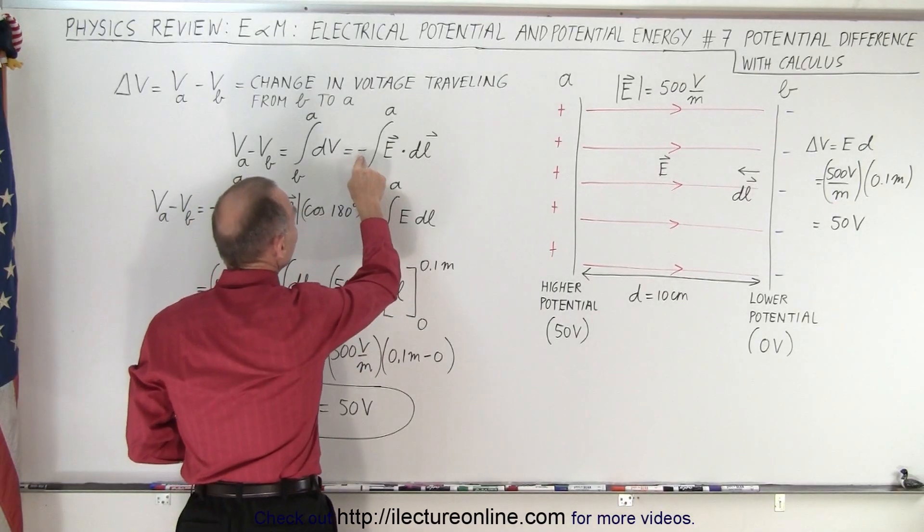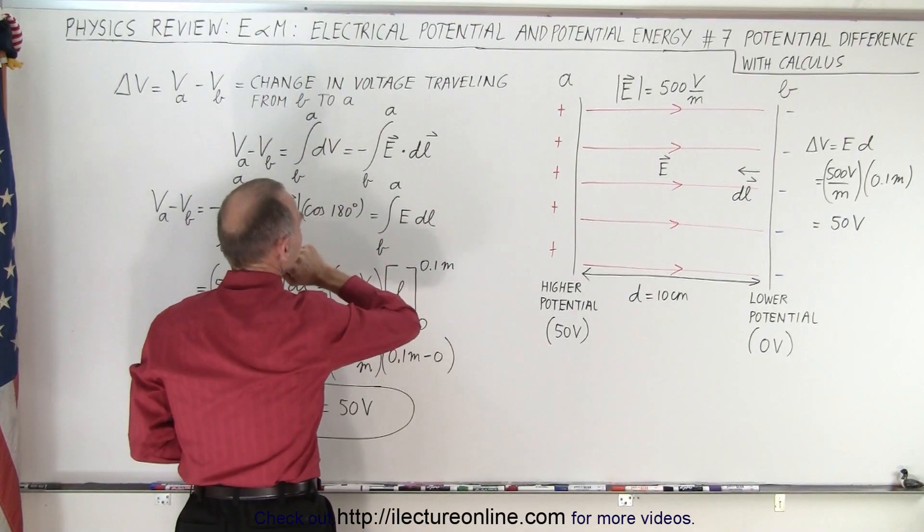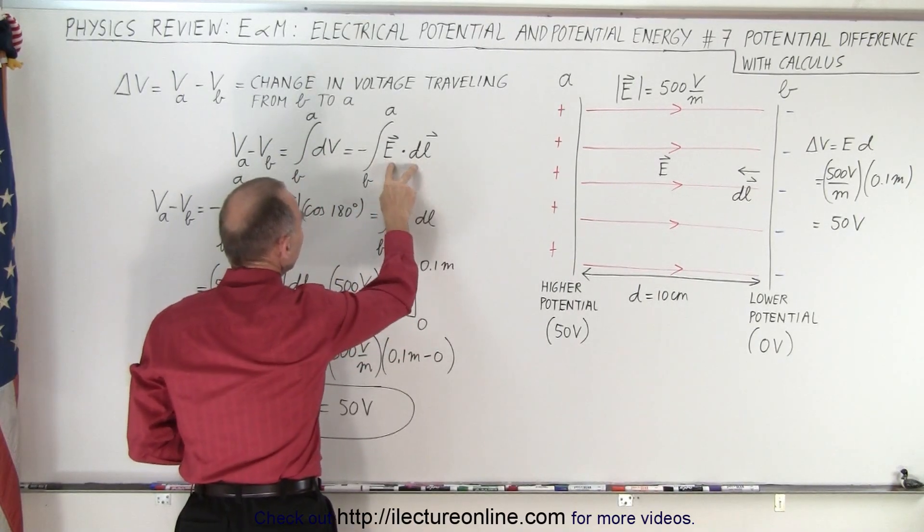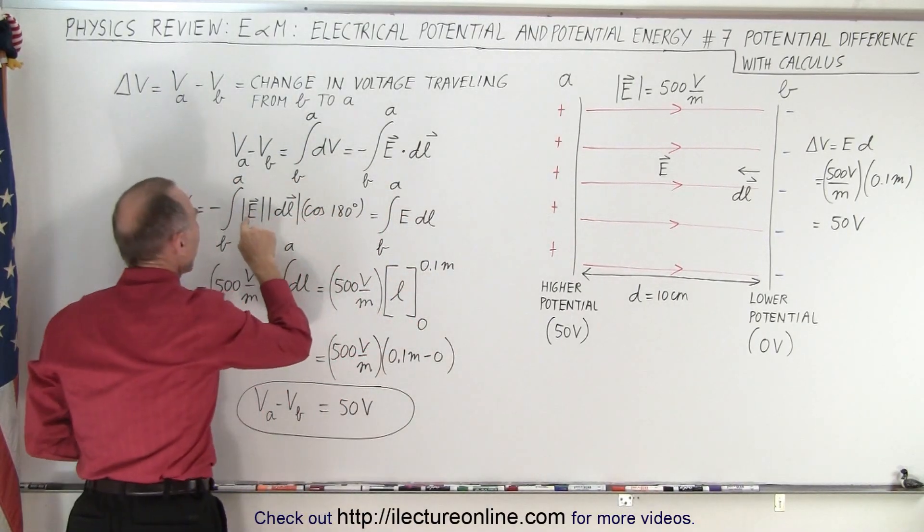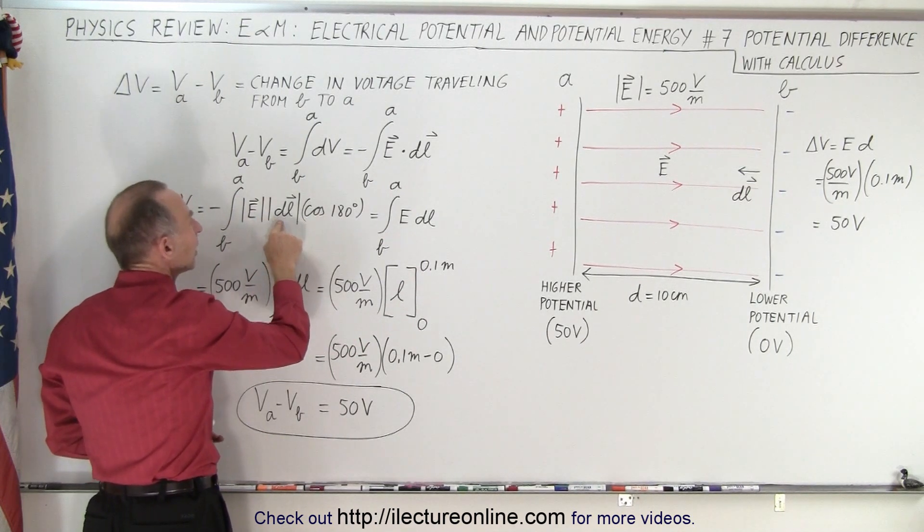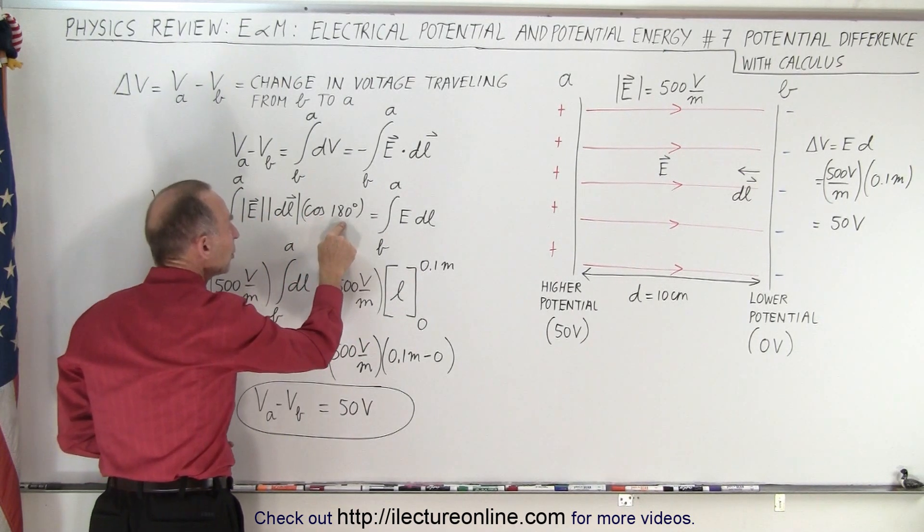So notice we already have a negative sign in front, that's part of the definition. So now, when we take the dot product, that becomes the magnitude of E times the magnitude of DL times the cosine of the angle between the two.